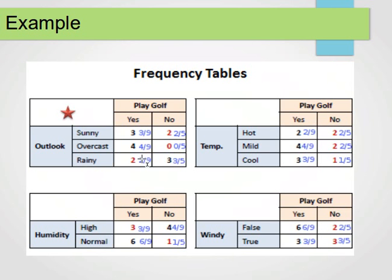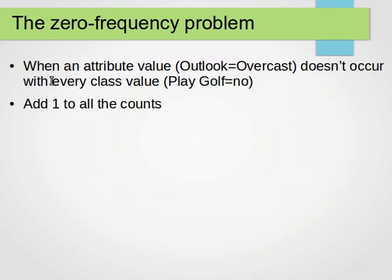The way around the zero frequency problem is to add one to all the counts. So the counts instead of being 3, 4, 2, 2, 0, 3 become 4, 5, 3, 3, 1, 4, and we do the same for everything else. The probabilities will slightly change, but this resolves the zero frequency problem. In the next video, I'll show you how to deal with numerical data when building a Naive Bayesian classifier.